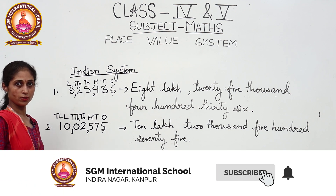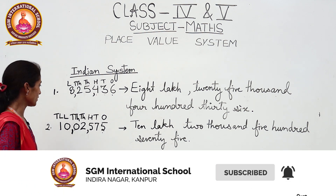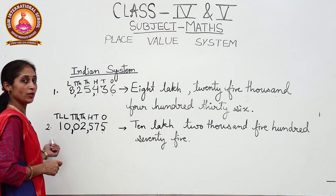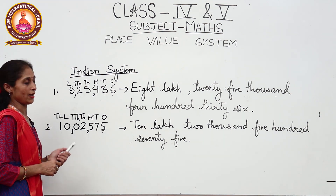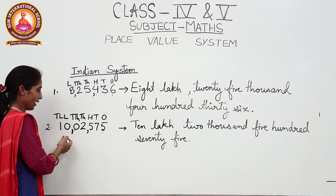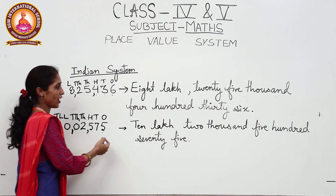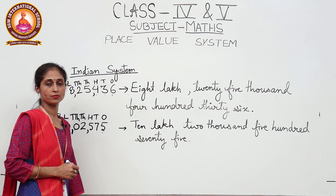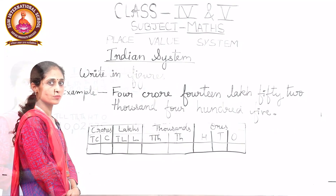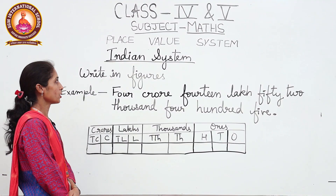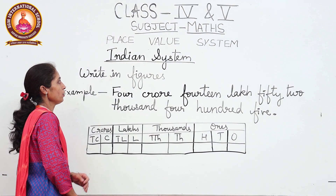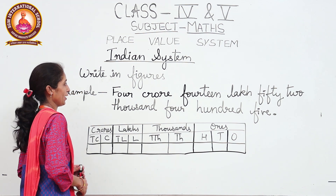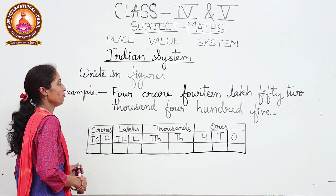Zero is at the lakhs place and one is at the ten lakhs place. Now for writing the number name, we will start from the left side: ten lakh two thousand five hundred seventy-five.